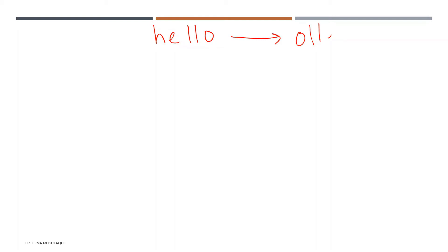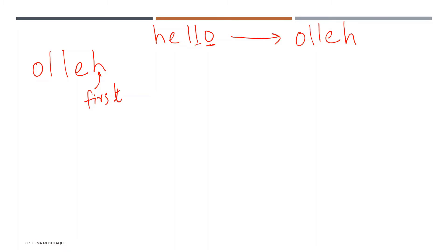Let's think about the recursive approach. Say the string is 'hello' and I need to get 'olleh'. One approach is to separate letters one by one. But really what's happening is we are reading the first letter last. If you remember the Python call stack mechanism, in a recursive call it creates a stack of values — last in, first out.